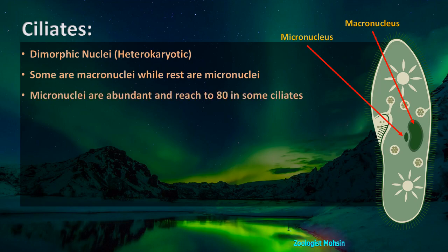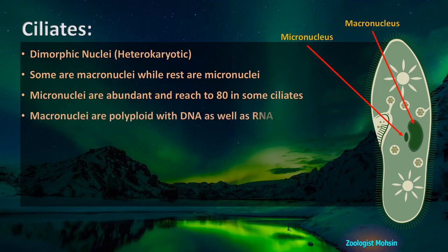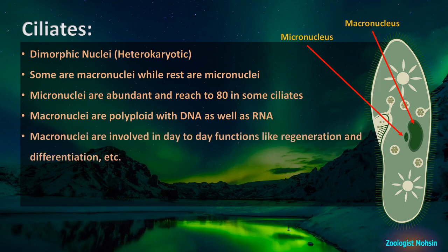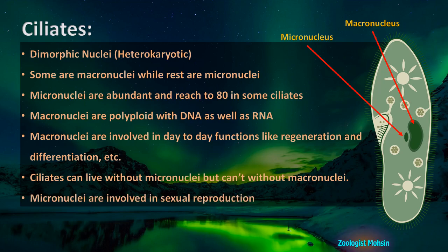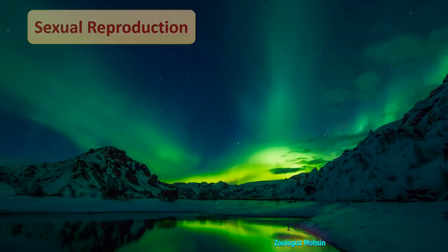Micronuclei are abundant and can reach up to 80 in number in some ciliates. Macronuclei are polyploid, containing both DNA and RNA. Macronuclei are involved in day-to-day functions like regeneration and differentiation. Ciliates can live without micronuclei but cannot live without macronuclei, as the macronucleus is essential for survival. Micronuclei are involved in sexual reproduction, which is our focus today.